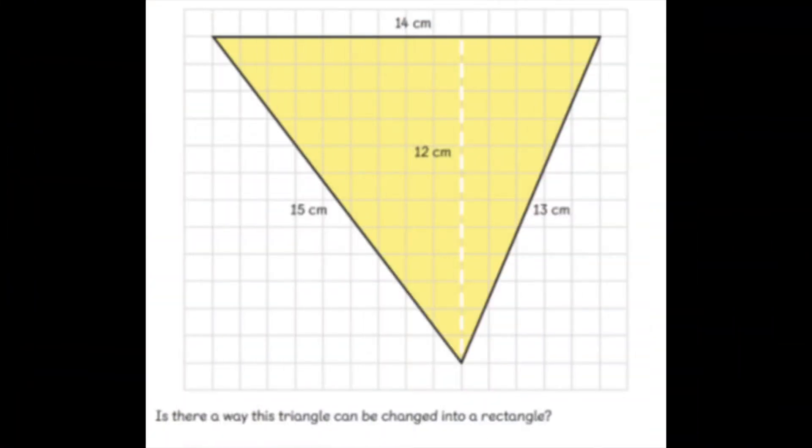Now I want you to look at this triangle. See if you can identify the base of the triangle, the height of the triangle, and use that to help figure out the area of the triangle. Now there's also a question there. Can you figure out if that triangle can be changed into a rectangle? How might this help us? Is there more than one way to do this? Have an investigation.